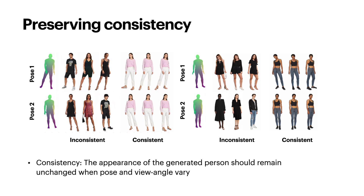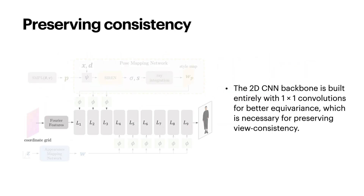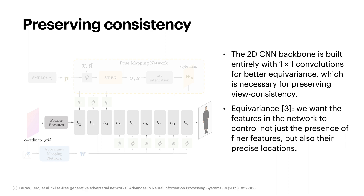Traditional CNN-based generators are not equivariant, which makes them inconsistent under geometric transformations. In our case, this means that the appearance of the generated human may change when pose or view angle vary. To preserve consistency, we use a 2D CNN backbone built entirely with one-by-one convolutions, which is a necessary design choice for building an equivariant generator, according to a study titled Alias-Free GANs.